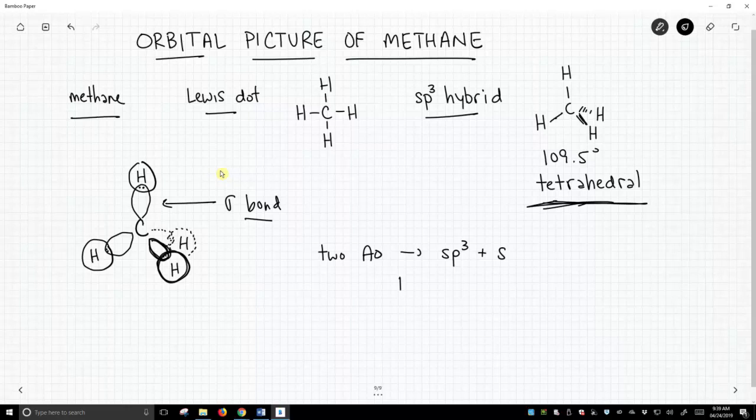And what do we get out? When we mix these together we get two molecular orbitals. We get our sigma, our low-energy sigma orbital, and our sigma star. The electrons of course are in the sigma orbital. So this is an orbital picture of methane.